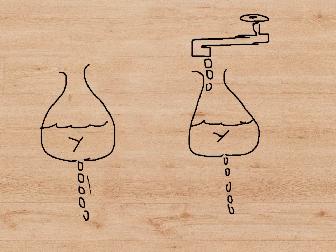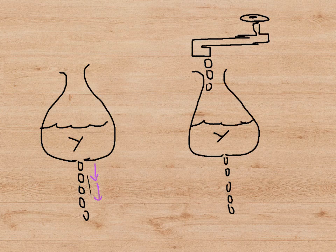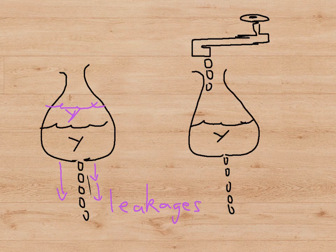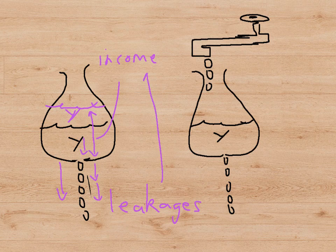To show this in action, imagine our economy as a plastic bag with a hole at one end through which water is dripping out. The dripping water represents the leakages from our circular flow. It's obvious that the rate of leakage — the speed with which water leaks out of the hole — will depend on how much water there is in the bag in the first place. So the more we have in terms of national income, the faster water will leak out, showing that leakages do indeed depend on national income.